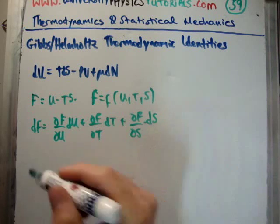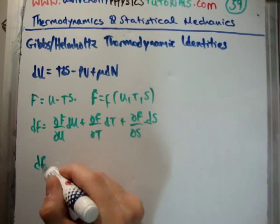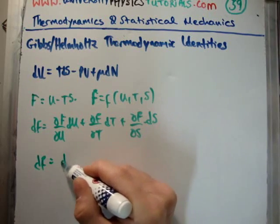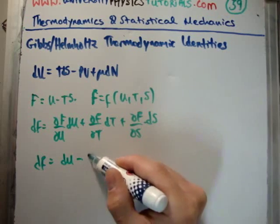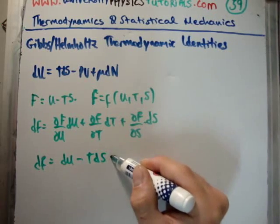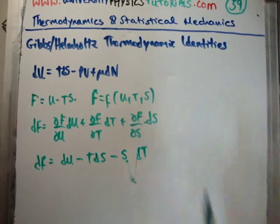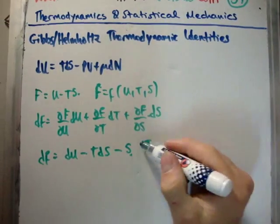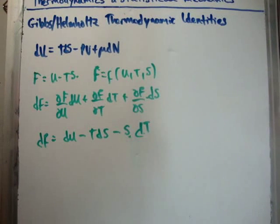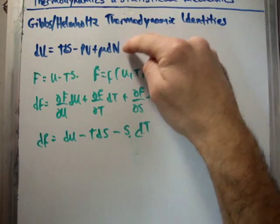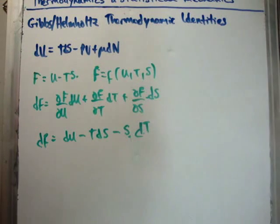So when you plug in the derivatives, you're going to get that dF is equal to dU minus TdS, or excuse me, minus SdT, like that, minus SdT. Okay, now what we're going to do is we know that we have dU. We can furthermore plug in dU because we already have what dU is here.